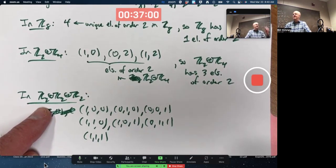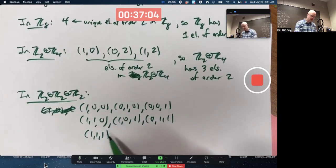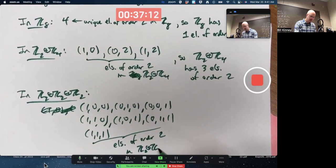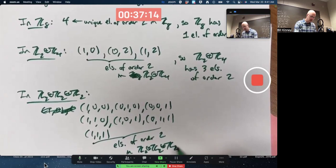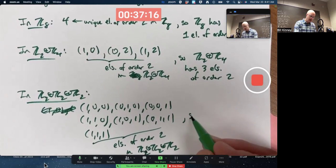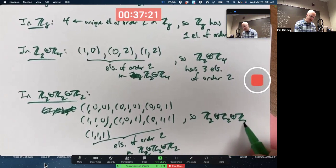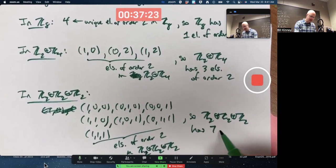One, one, one are the seven elements of this eight-element group, two times two times two, that have order two. So the elements of order two in this external direct product. So that external direct product has seven elements of order two.